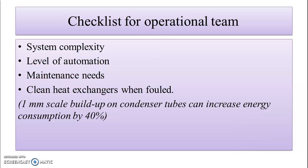Checklist for the operational team. System complexities should be checked. Level of automation should be checked. Maintenance needed should be checked. Clean the heat exchanger when fouled, because 1 mm of scale built up on a condenser tube can increase energy consumption by 40%. This applies not only to heat exchangers but also to evaporators — the same checklist can be used.